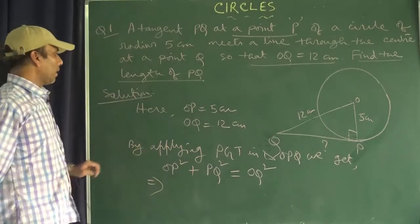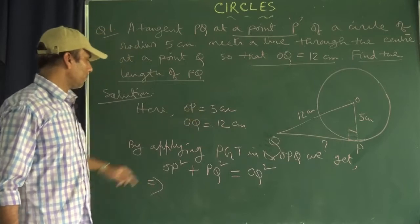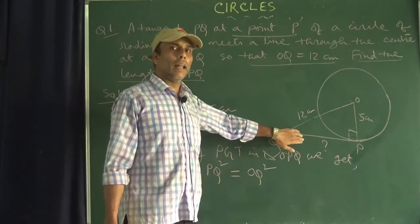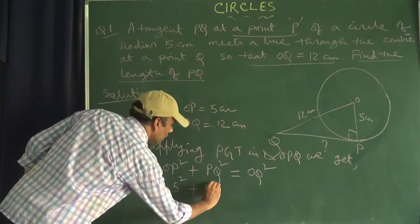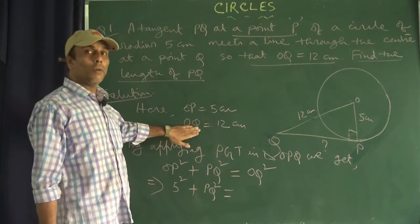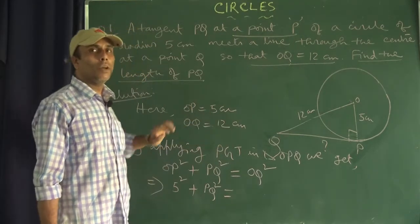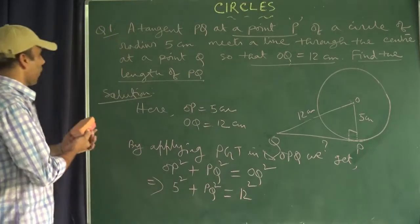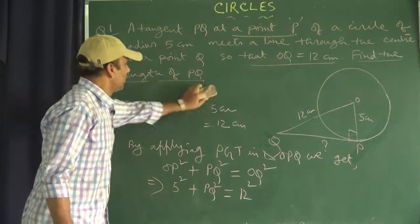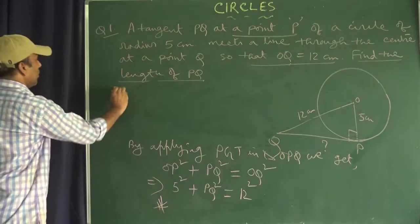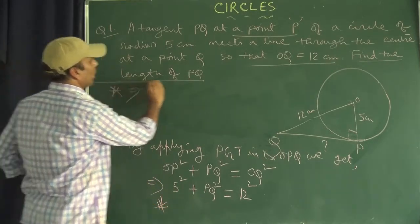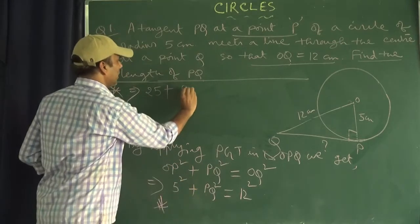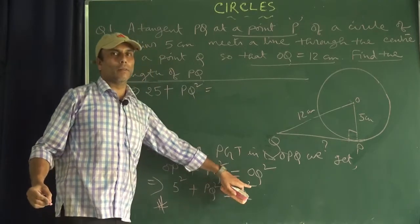Substituting the values: OP is 5 cm, so 5 squared plus PQ squared equals OQ squared. OQ is 12 cm, so we write 12 squared. This gives us 25 plus PQ squared equals 144.